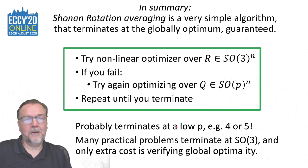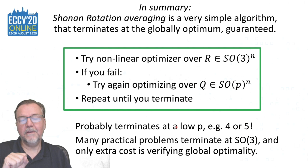So in summary, Shonan rotation averaging is a very simple algorithm. You simply optimize at SO3. If you fail, and you know when you fail, you optimize at SO4, then SO5, etc., until you terminate with the global optimizer. Typically, that is for a very low P, and typically, in fact, P is equal to 3, if your graph has high algebraic connectivity. That's Shonan rotation averaging. Thank you.